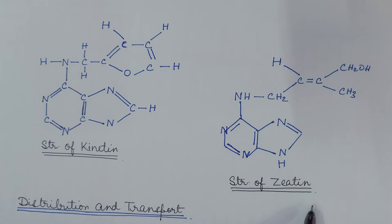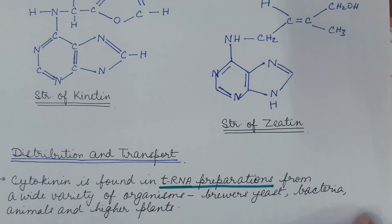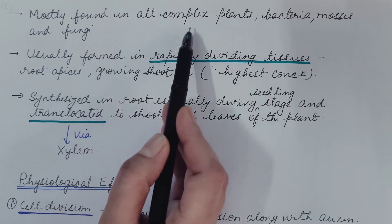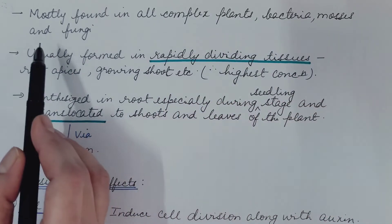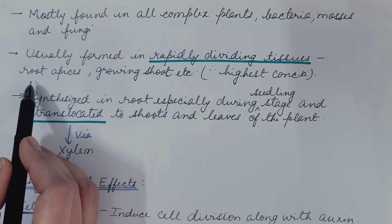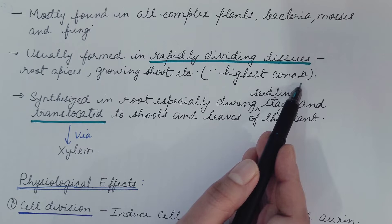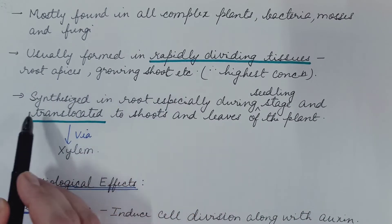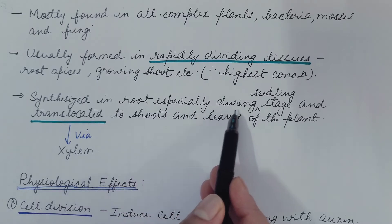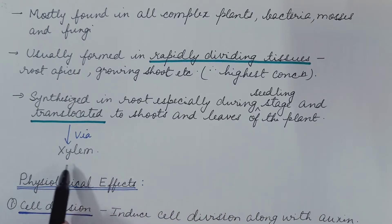Regarding the structure of kinetin and zeatin — and now distribution and transport. Cytokinin is found in transfer RNA preparations from a wide variety of organisms like brewer's yeast, bacteria, animals, and higher plants. We can say these are mostly found in all complex plants, bacteria, mosses, and fungi. Usually, these are found in rapidly dividing tissues like root apices and growing shoots. These are synthesized in roots, especially during the seedling stage, and translocated to shoots and leaves via xylem.